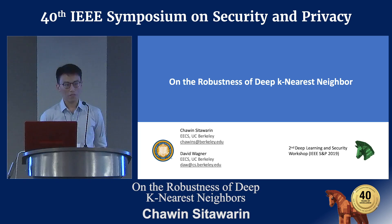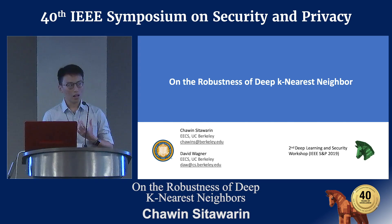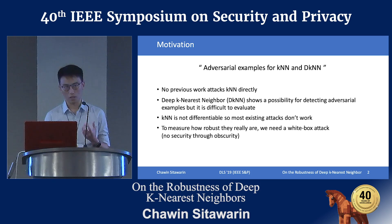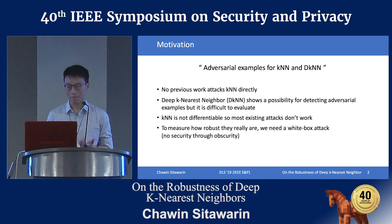If I have to summarize our work in one sentence, we find a method to generate adversarial examples for K-Nearest Neighbor and Deep K-Nearest Neighbor. The question is, why are we interested in these classifiers? It's because nobody has really looked into attacking these classifiers, and there's been more and more works, especially on Deep K-Nearest Neighbor, showing that these classifiers are potentially robust to adversarial examples and can also show some possibility of detecting adversarial samples and out-of-distribution samples.